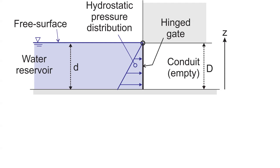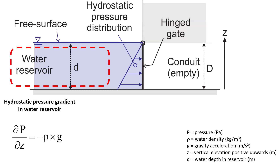In the reservoir itself we have a hydrostatic pressure gradient — the variation of pressure with vertical elevation equals minus rho g, where z (vertical elevation) is positive upward, rho is the water density, and g is the gravitational acceleration. The pressure distribution is linear, presenting a triangular shape, with p equals zero at the water surface and the pressure at the bottom equal to rho g d (small d for the depth of the reservoir).